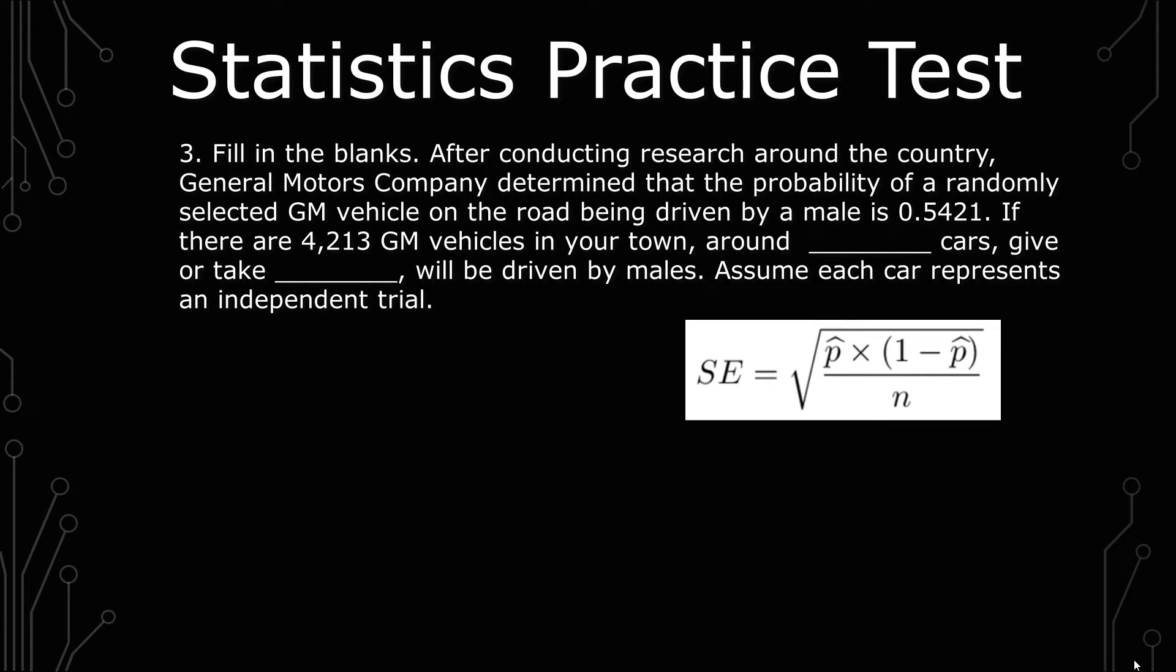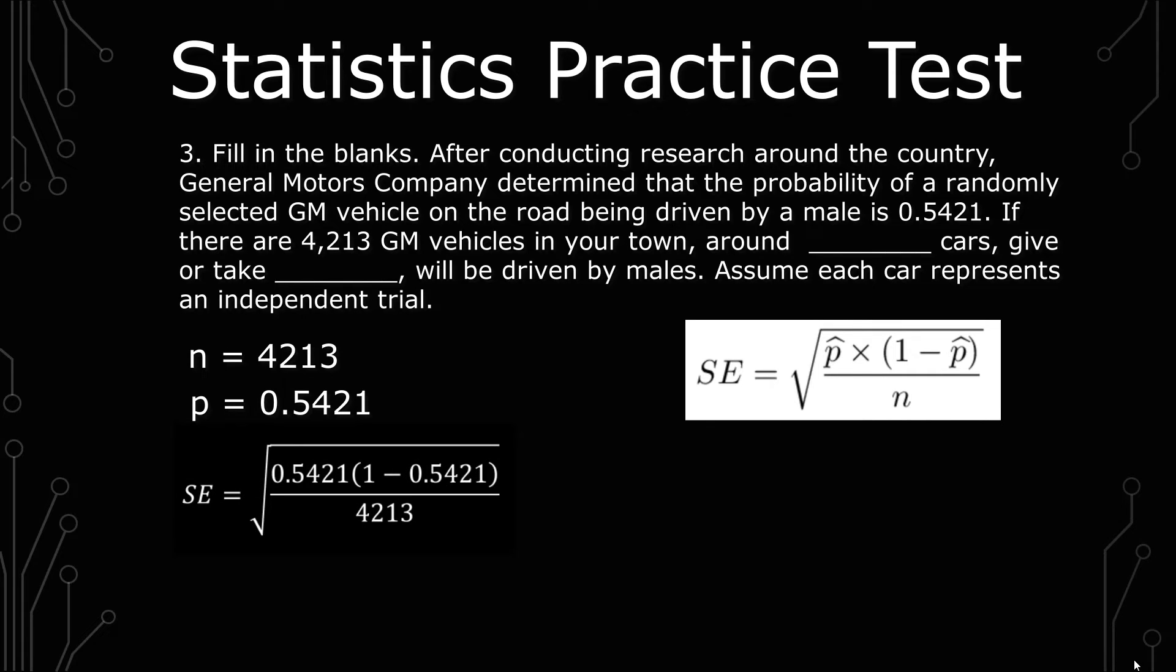The question already gives us an n, which is 4,213 and the proportion, which is 0.5421. Now it's just a matter of calculating the standard error, which you get as the square root of 0.5421 times one minus 0.5421 over 4,213 to give you 0.0077 and that's rounded.